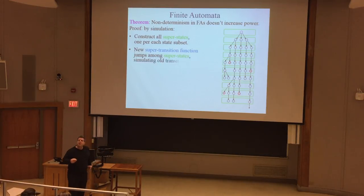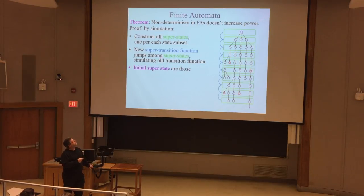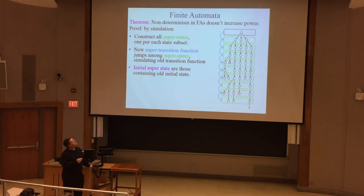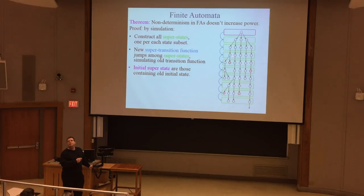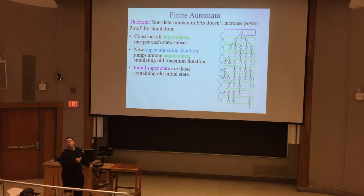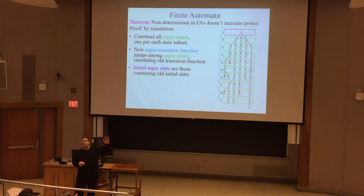We then define super transitions: if some symbol causes the initial state to go to three next states in the non-deterministic machine, then the corresponding super state in the deterministic simulator transitions to the super state containing those three states in one super transition. The initial super state contains only the single initial state of the original machine - even non-deterministic machines start in one place.